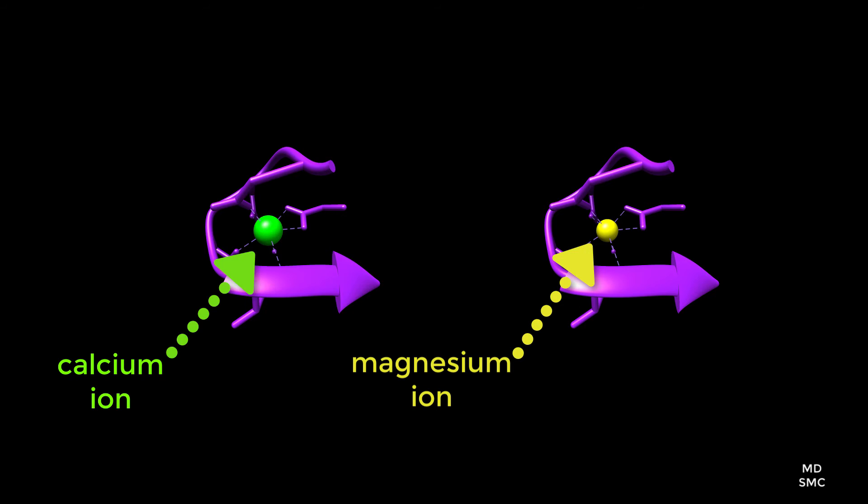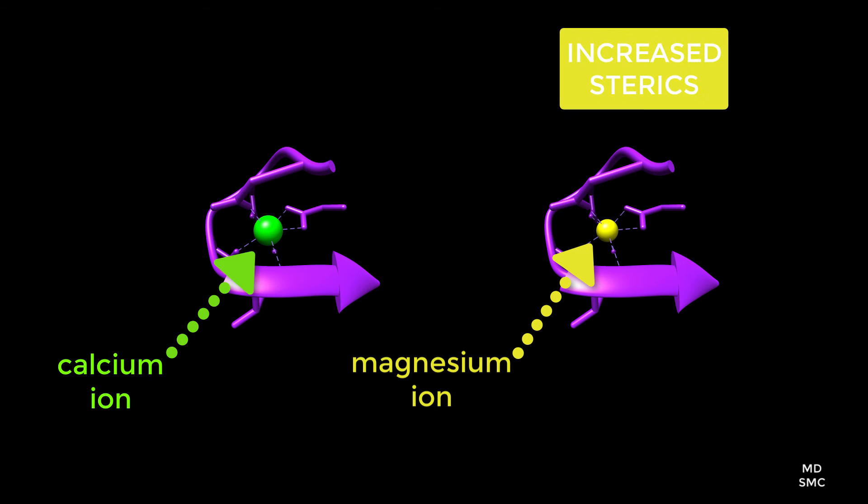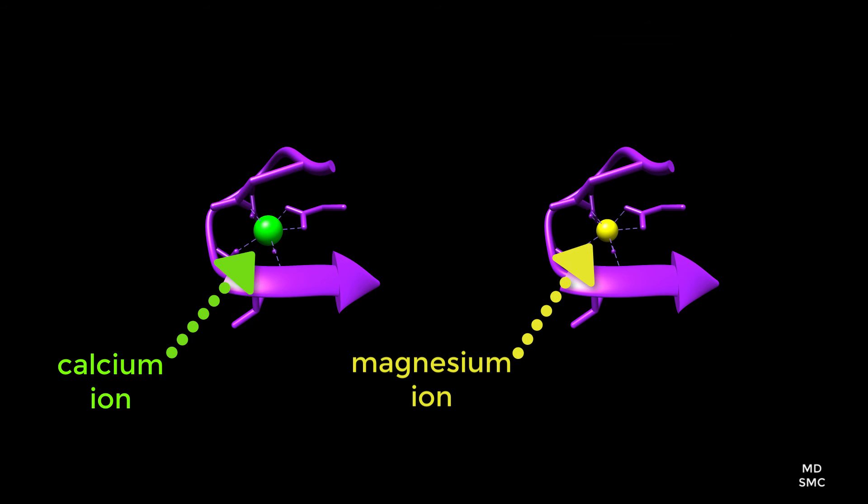If magnesium ions are contained within the binding sites, the ligands are forced to be closer together, increasing unfavorable steric interactions. The decreased steric interactions are why the larger calcium ions have a stronger affinity for binding within this site compared to smaller magnesium ions.